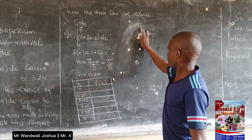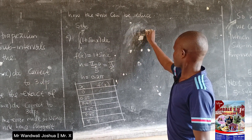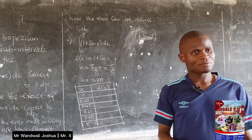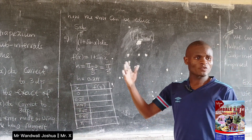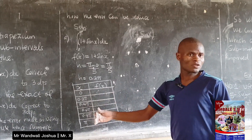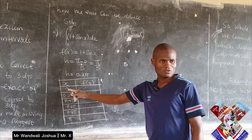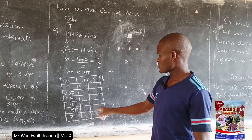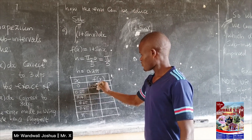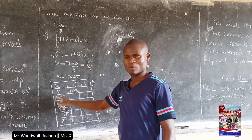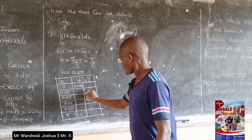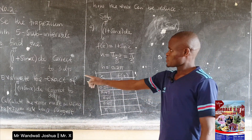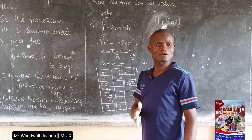Program the function into your calculator: open bracket, press 1 + sin(x), close bracket. Then use the SOLVE function. Enter x = 0 and you get f(0) = 1. Note: when the question says correct to three decimal places, your table must carry at least four decimal places to avoid underestimating. Next, enter x = 0.2π and you get f(0.2π) = 1.5878.